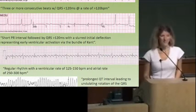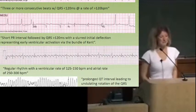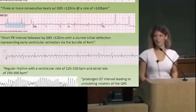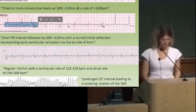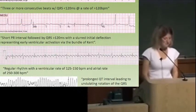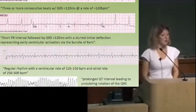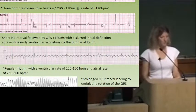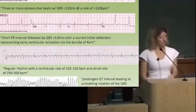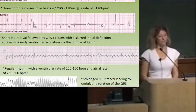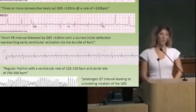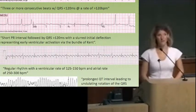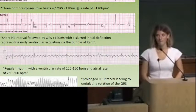Can you see the delta wave here? That is supposed to be a delta wave. That means this rhythm is WPW — Wolf-Parkinson-White. They might describe it as a short PR interval followed by a QRS greater than 120ms. It's a wide QRS complex with slurred initial deflection representing early ventricular activation through the bundle of Kent. Procainamide is the drug of choice for WPW.